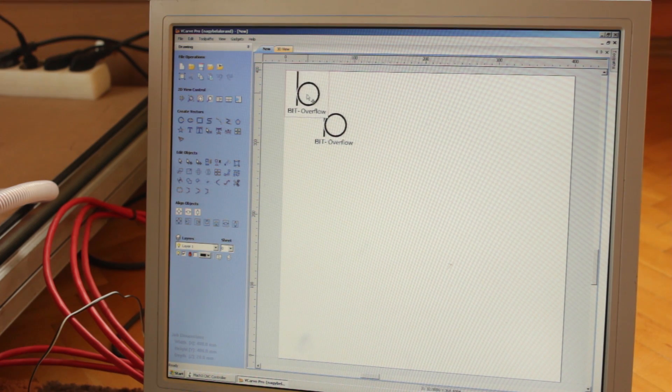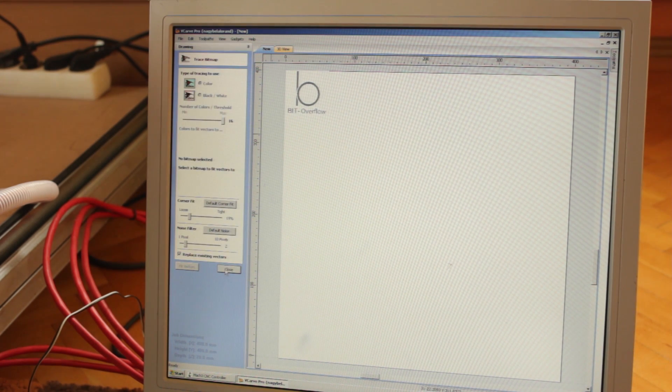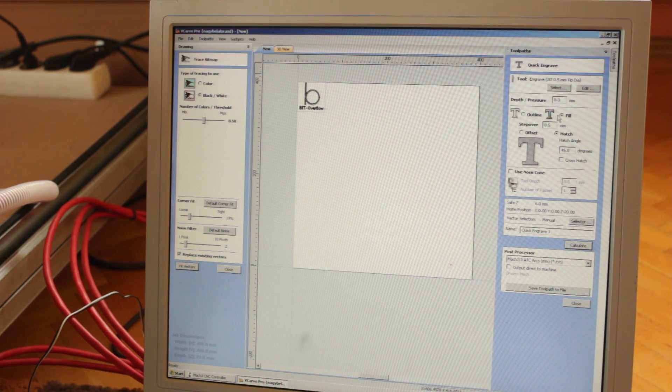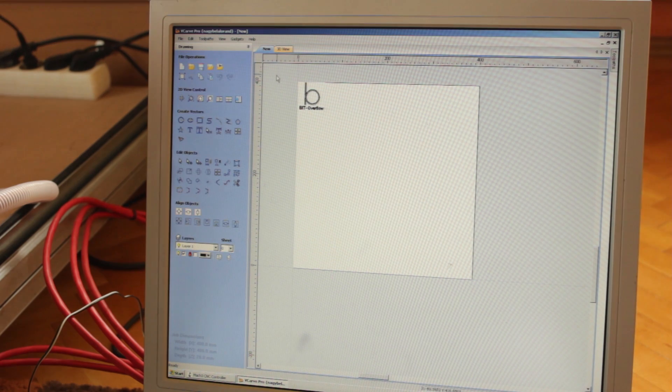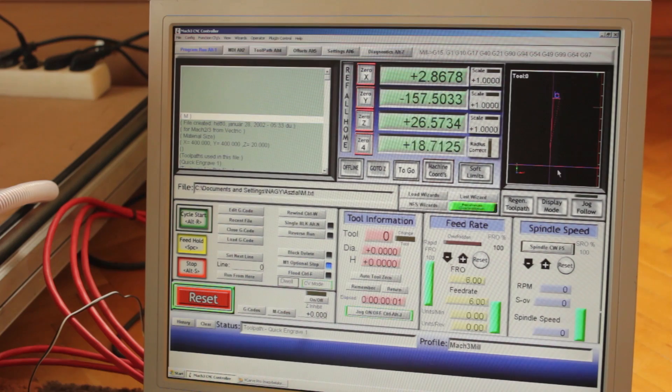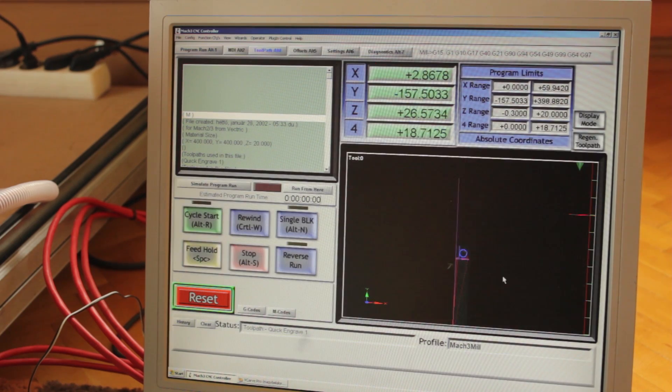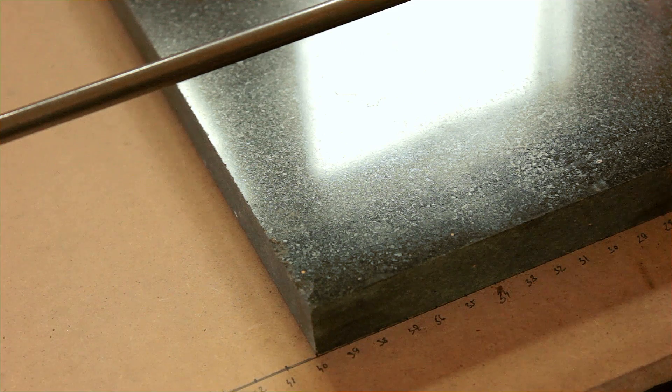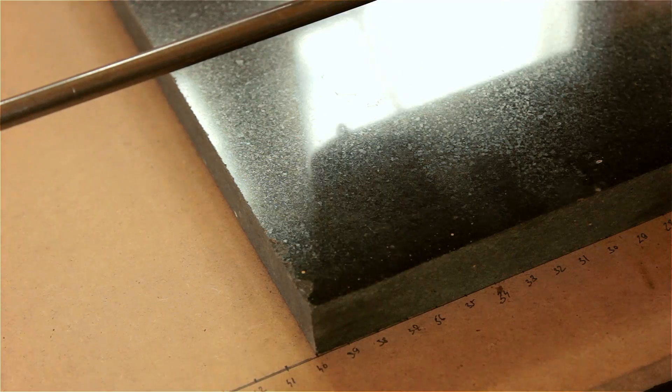After I am done I export the drawing as a G-code, then I import the G-code in Mach3, a software made for controlling a CNC machine. When I am done with setting the zero point the machine can start engraving.